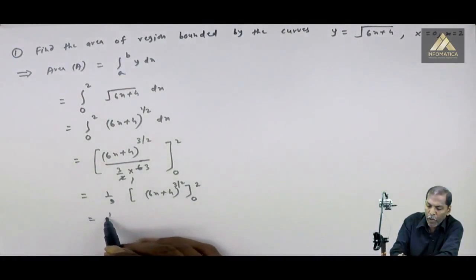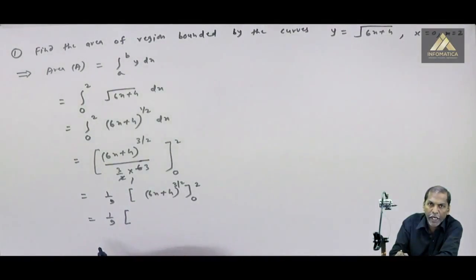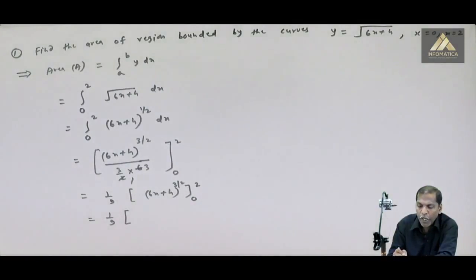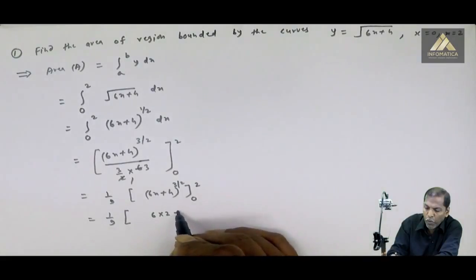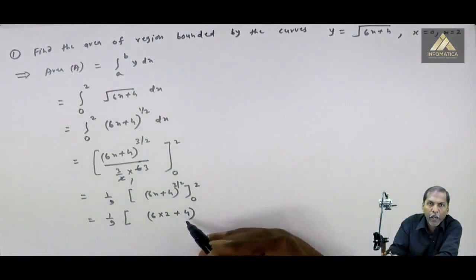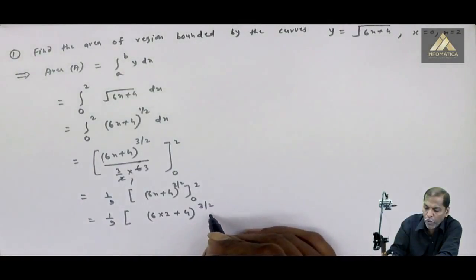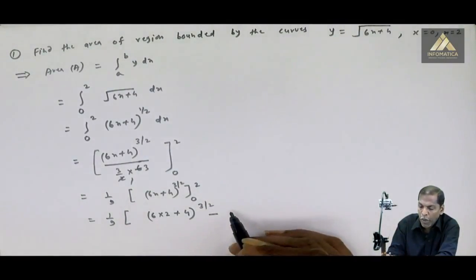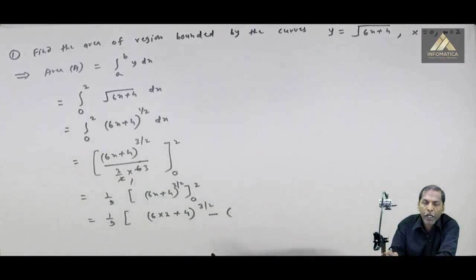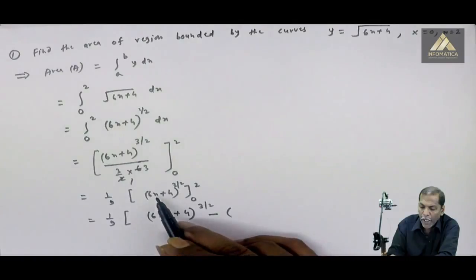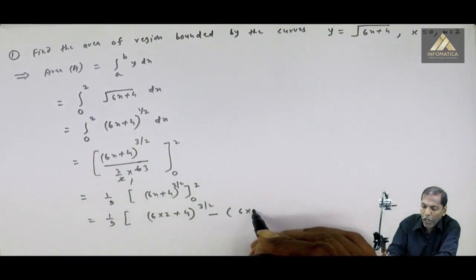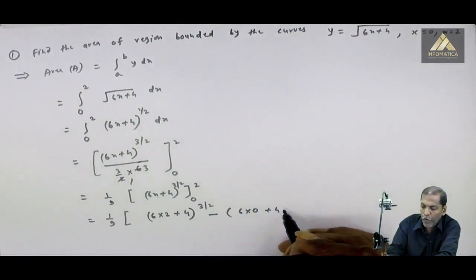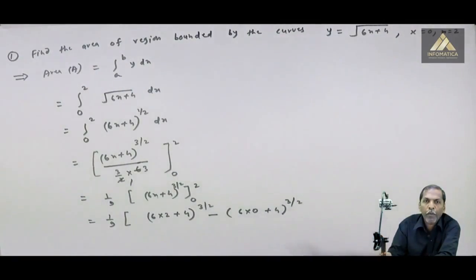सबसे पहले 1 upon 9, we write as it is. अब x को replace करेंगे upper limit से, that is 2 से. तो हमें answer मिलेगा: 6 multiply by 2 plus 4, whole bracket raised to 3/2. Then we put minus sign for the second bracket.